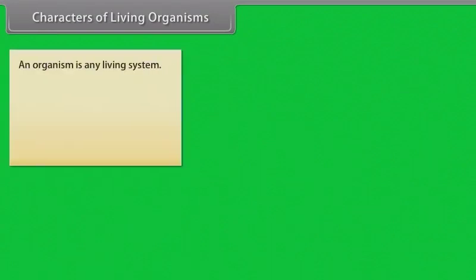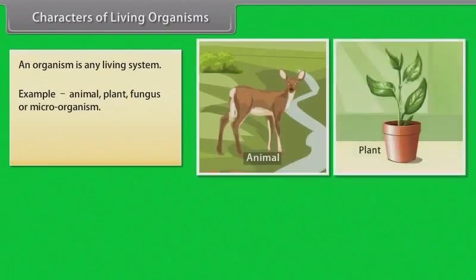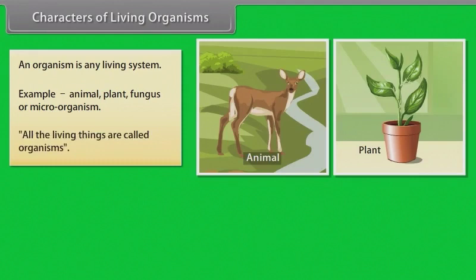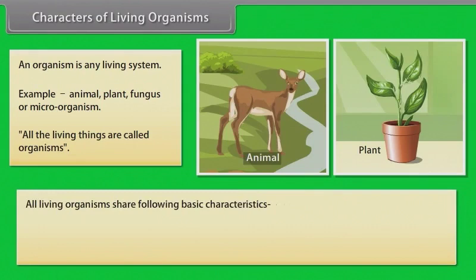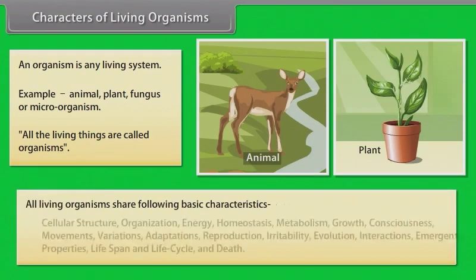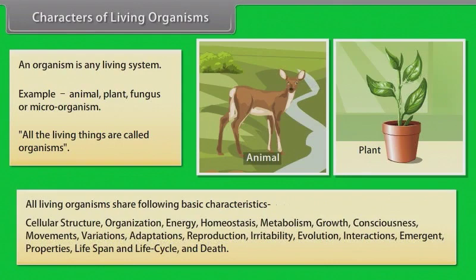An organism is any living system — examples include animals, plants, fungi, or microorganisms. All living organisms share the following basic characteristics: cellular structure, organization, energy, homeostasis, metabolism, growth, consciousness, movements, variations, adaptations, reproduction, irritability, evolution, interactions, emergent properties, lifespan and life cycle, and death.